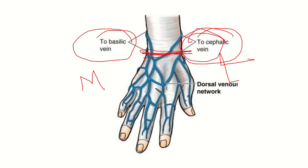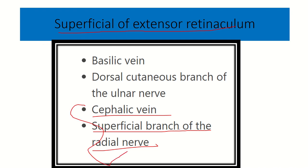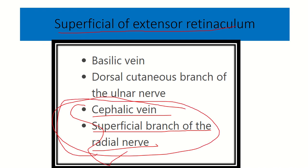So the cephalic vein is also at risk of injury since the lacerated wound is located on the lateral side. The superficial structures above the extensor retinaculum at the wrist joint are: basilic vein, dorsal cutaneous branch of the ulnar nerve, cephalic vein, and superficial branch of the radial nerve. On the lateral side there are two structures — the superficial branch of the radial nerve and the cephalic vein — and on the medial side there are two structures. Both lateral structures are at great risk of injury in this case.